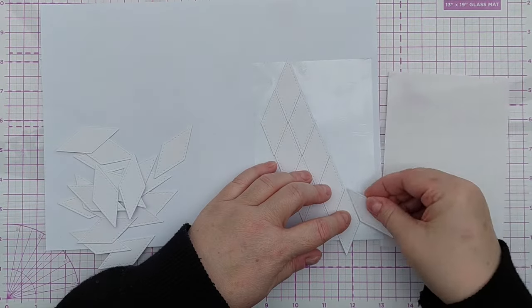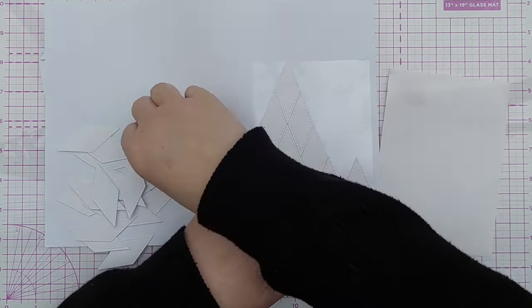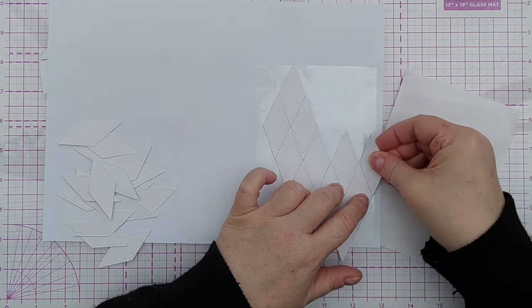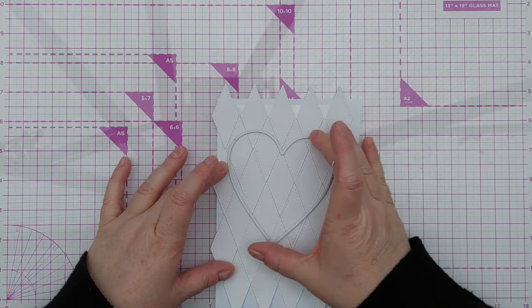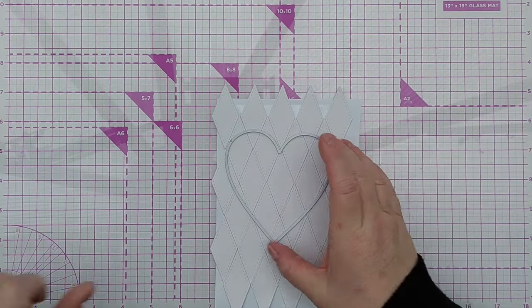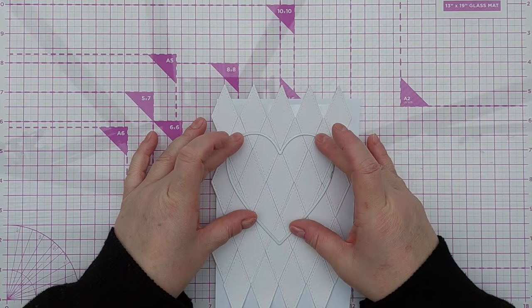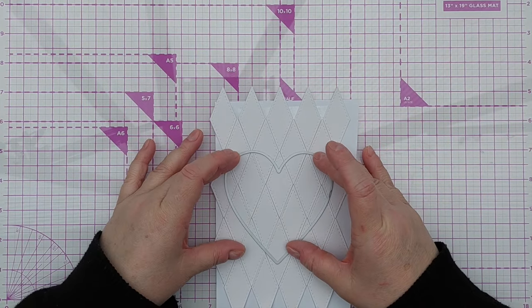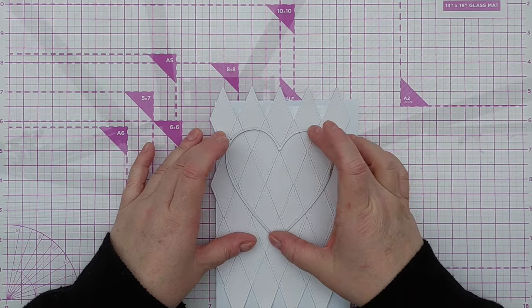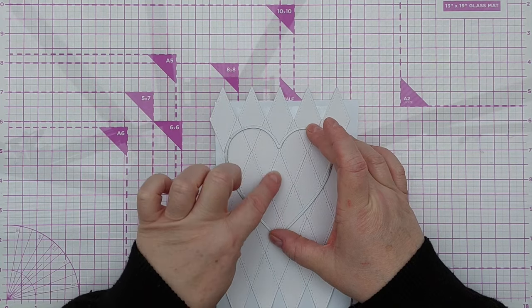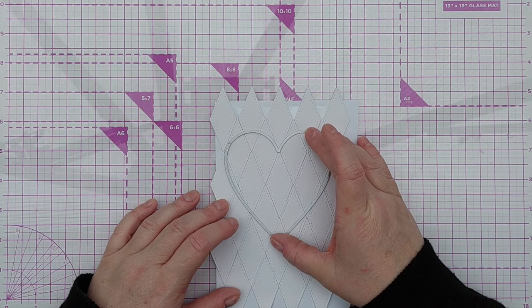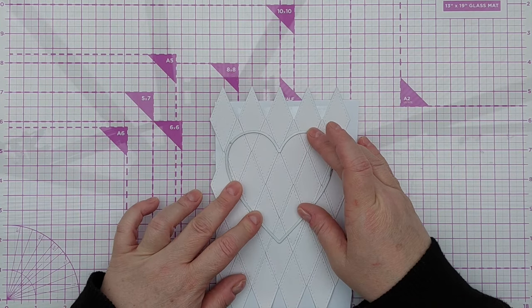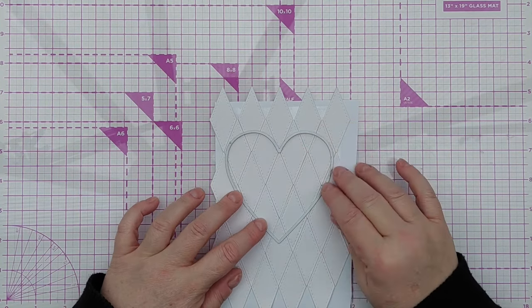So there we have our quilt of diamonds. And I'm just going to position my heart on here and pick the right place. This is the sort of central diamond. I'm just trying to decide where I want it on the heart. I think that's about the right place.